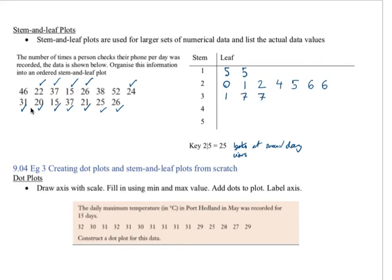We're moving on to our 40s, and we can see there's only one value of 46. And then 50s, there's only one value, 52. So now we have created our stem-and-leaf plot showing the number of times a person checks their phone.